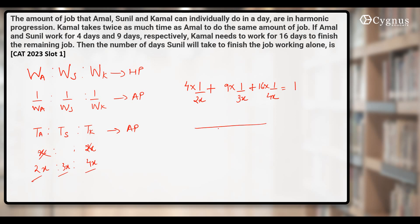Taking the LCM of 2, 3, and 4, which is 12, multiply both sides by 12x. This gives 24 + 36 + 48 = 12x × 1. So 24 + 36 = 60, and 60 + 48 = 108. Therefore, 12x = 108, which means x = 108/12 = 9.